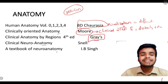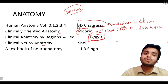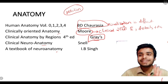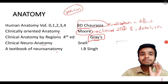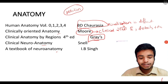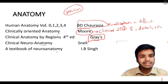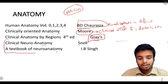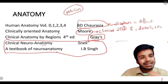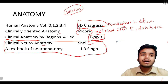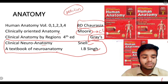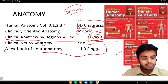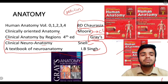Next is Gray's Anatomy. The name is very fancy but it can be very difficult to use. If you prefer to read a standard book, BD Chaurasia is one recommended option for anatomy, and Gray's Anatomy is one of the favorite books recommended by teachers and everyone.